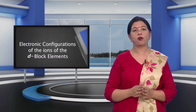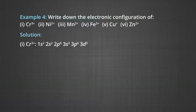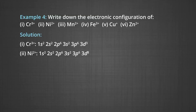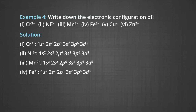Remember that 4S electrons are removed first prior to the 3D electrons. The electronic configuration of Cr³⁺ is 1S², 2S², 2P⁶, 3S², 3P⁶, 3D³. The electronic configuration of Ni²⁺ is 1S², 2S², 2P⁶, 3S², 3P⁶, 3D⁸. Manganese in +2 state is 1S², 2S², 2P⁶, 3S², 3P⁶, 3D⁵. Fe in +3 state is 1S², 2S², 2P⁶, 3S², 3P⁶, 3D⁵.